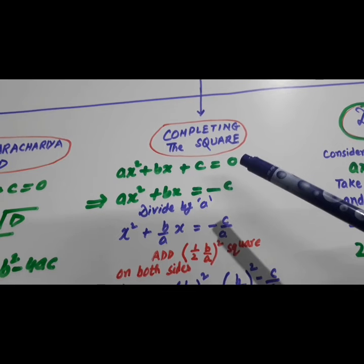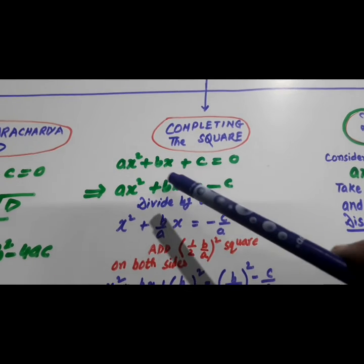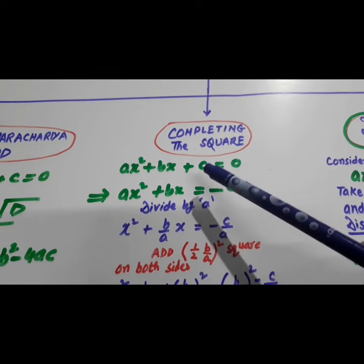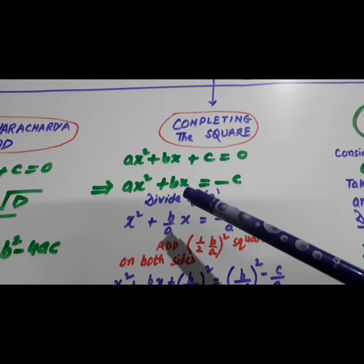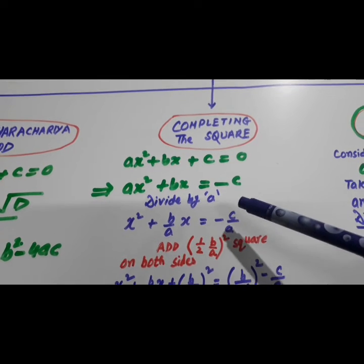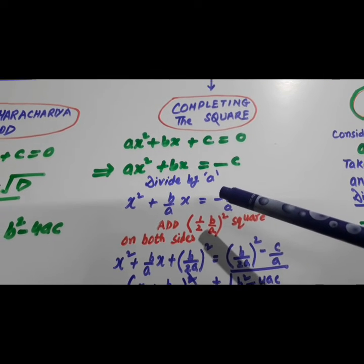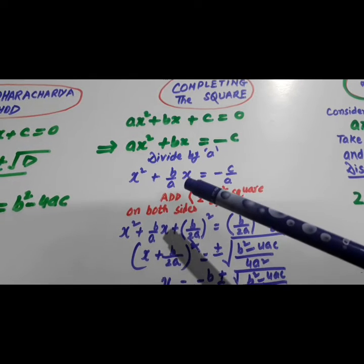Now, this second method is completing the square. Ax square plus Bx plus C is equal to zero. Ax square plus Bx is equal to minus C. Divide by A.